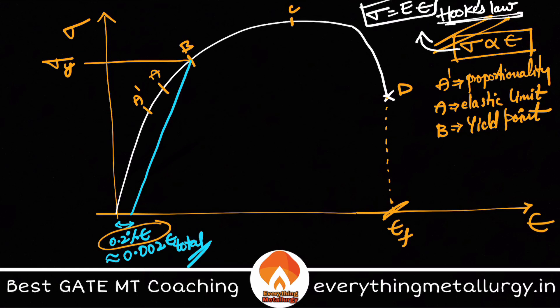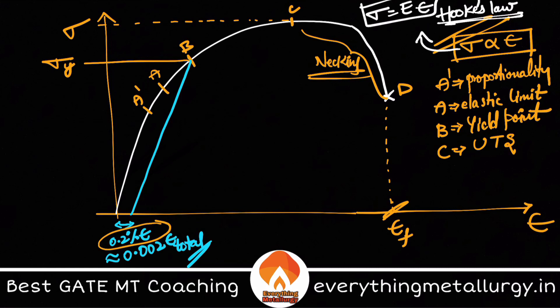Point C is called the ultimate tensile stress (UTS) — it is the maximum stress a body can sustain. After that, you can see the stress decreasing and failure taking place; this is due to a phenomenon called necking. Finally, point D is the fracture point. So this covers the important basics of why we study mechanical metallurgy and how the stress-strain curve helps us understand different deformation types and mechanical properties.